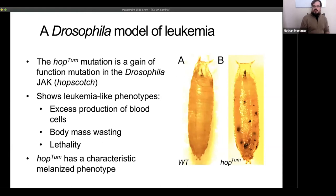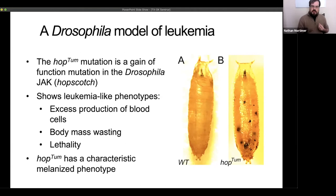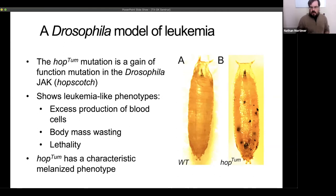We've isolated a Drosophila model of leukemia — a gain-of-function mutation in JAK very similar to the human disease-causing mutation. That same mutation in a fly leads to leukemia-like phenotypes: excess blood cell production, wasting of body mass, and lethality. This mutant has a very easy-to-score phenotype — you can see little melanizations throughout the larva as a result of excess blood cell production, similar to melanization of a parasite but undirected, appearing all throughout.